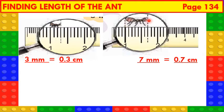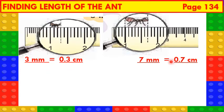Now, let us find the length of a big ant. See here: 1, 2, 3, 4, 5, 6, 7. So, the length of this big ant is 7 millimetres. This 7 millimetres is also written as 0.7 centimetres. Or, we can say that the length of this big ant is 7 tenths of a centimetre. Since we know now that 1 centimetre is 10 millimetres.